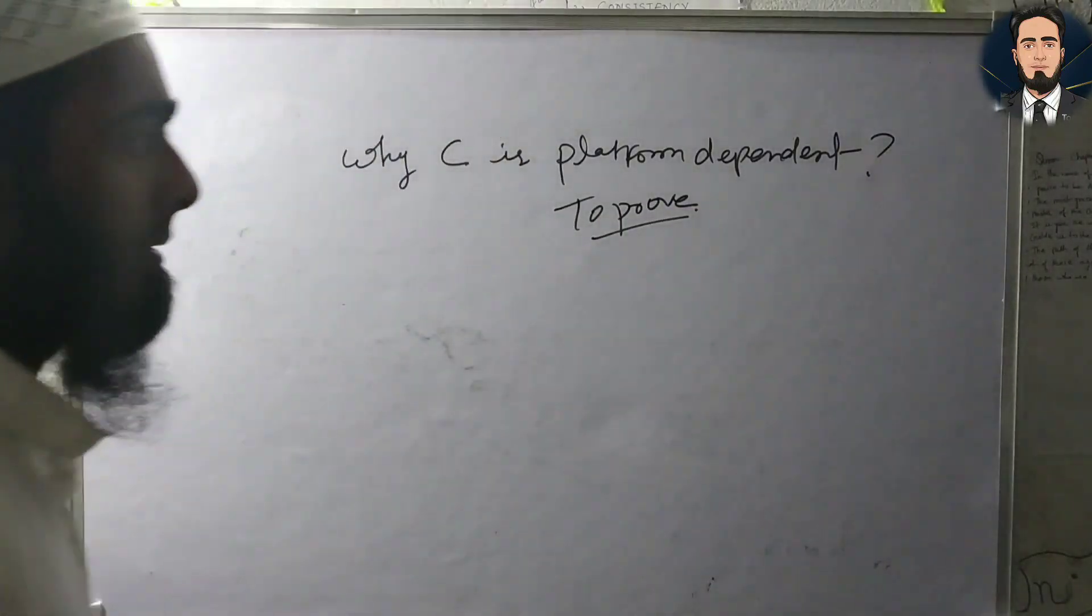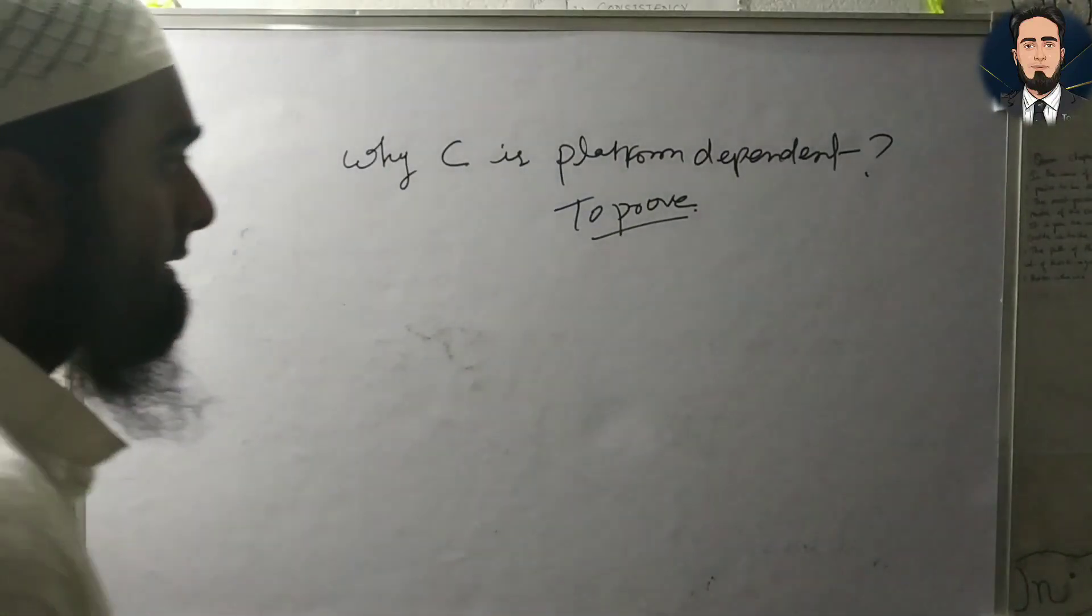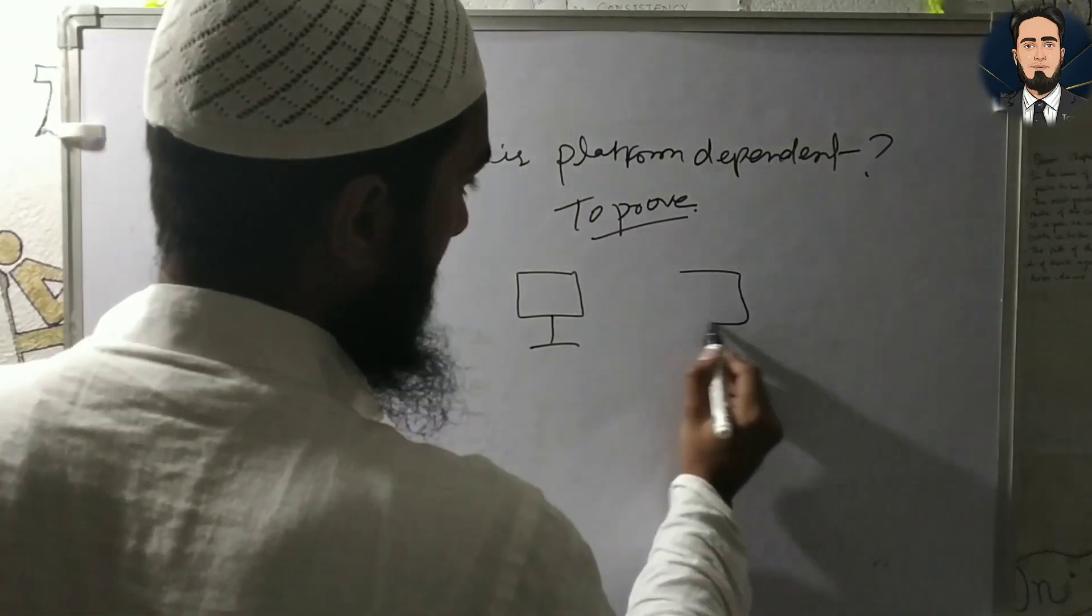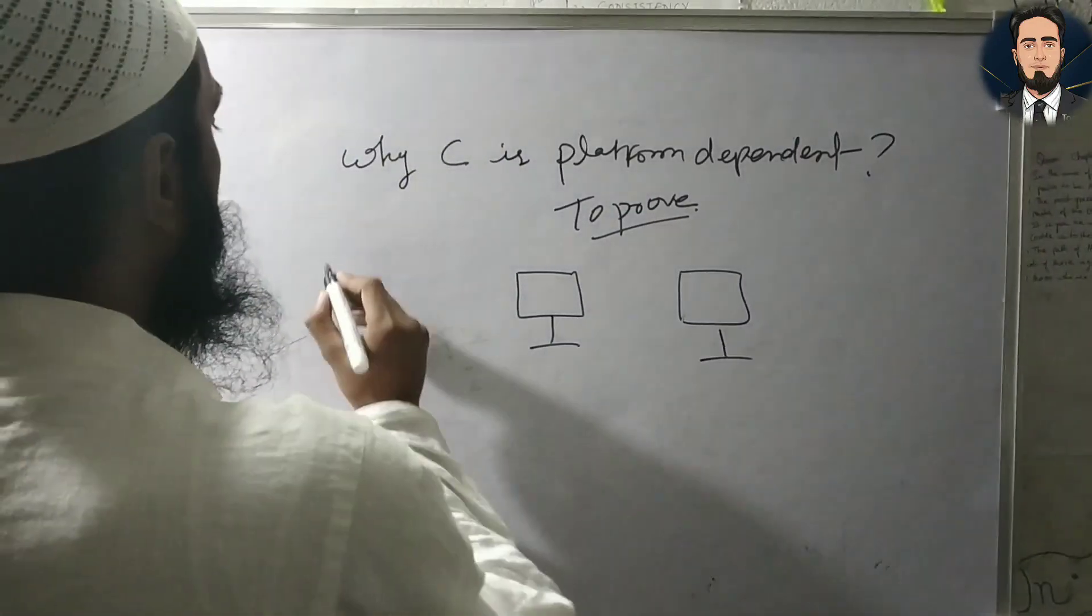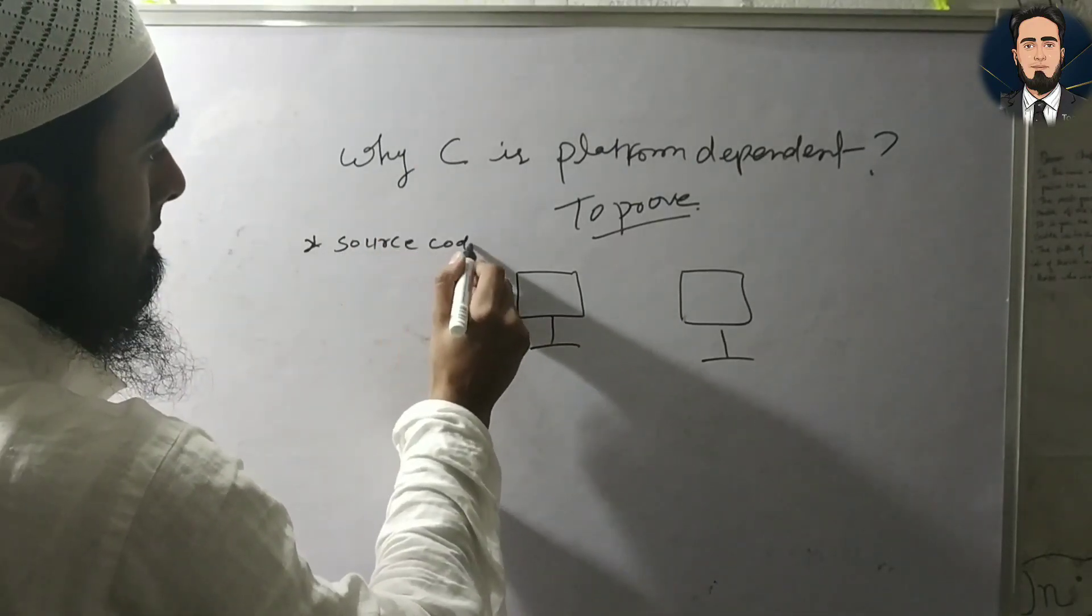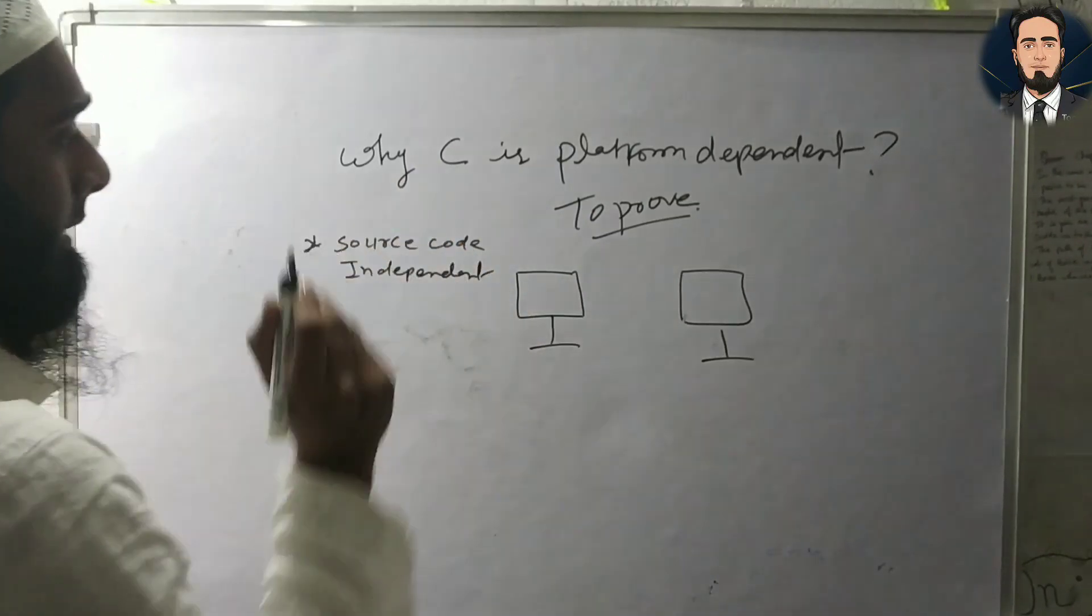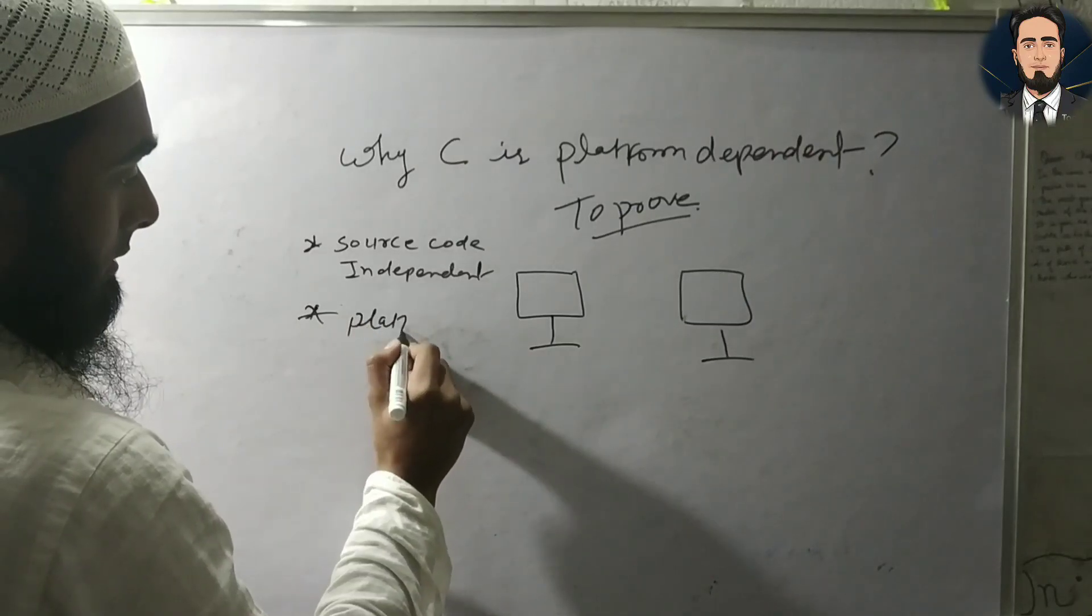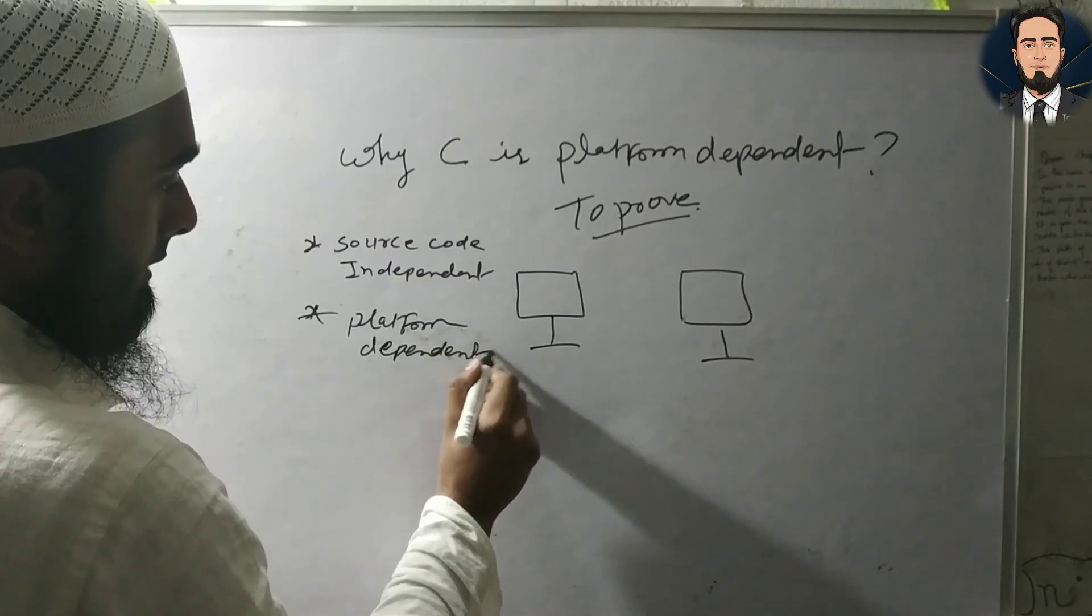I will prove it. Basically, C means you have two computers. C program source code is independent but platform dependent.